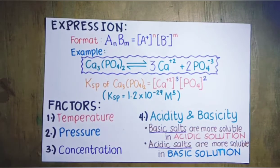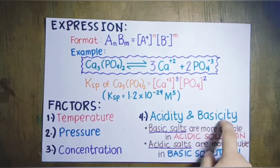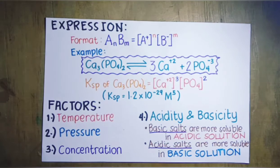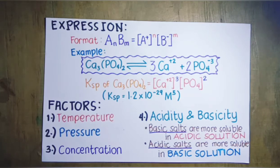There are four major factors that can affect the solubility or dissociation of a salt or ionic compound: temperature, pressure, concentration, and acidity and basicity. For temperature and pressure, the trend is: as temperature or pressure increases, the solubility of a salt also increases. This can be explained through Le Chatelier's Principle. If you are not yet familiar with Le Chatelier's Principle, watch my video about it — the link is in the description box below.